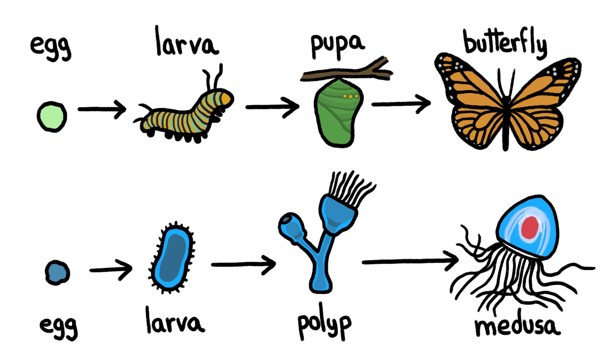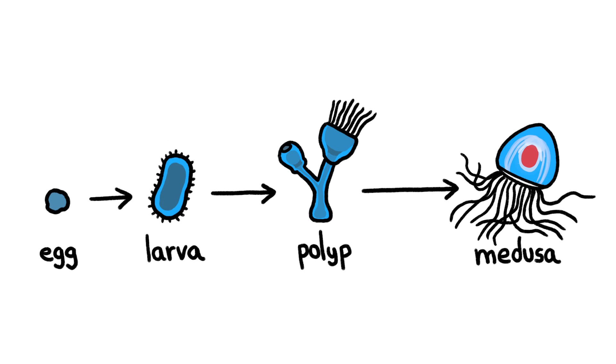Like butterflies, Turritopsis morph through multiple stages during their life cycle. But unlike butterflies, if Turritopsis get wounded or if times get tough, they can morph backwards, reverting to their immature polyp form until conditions improve.